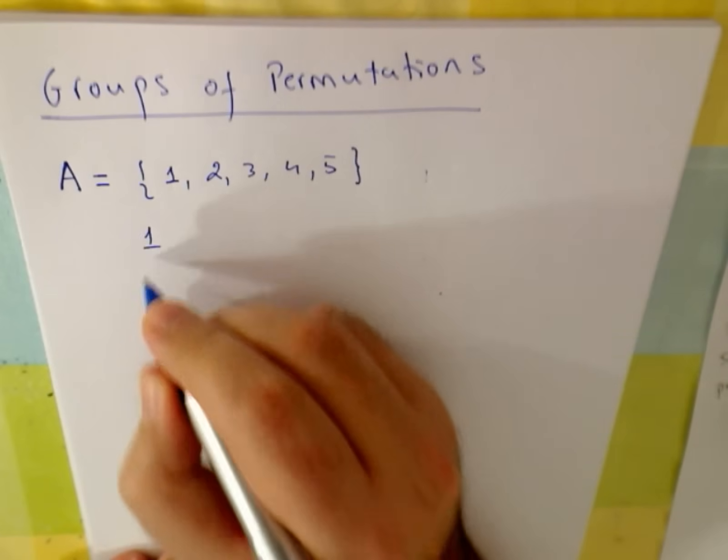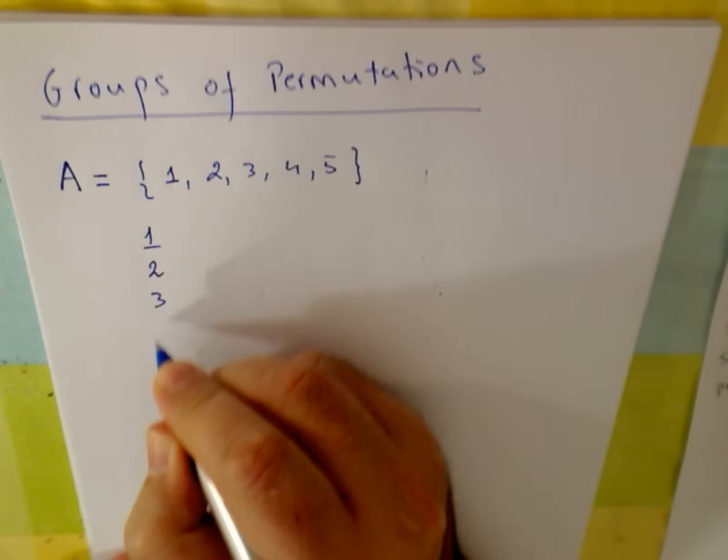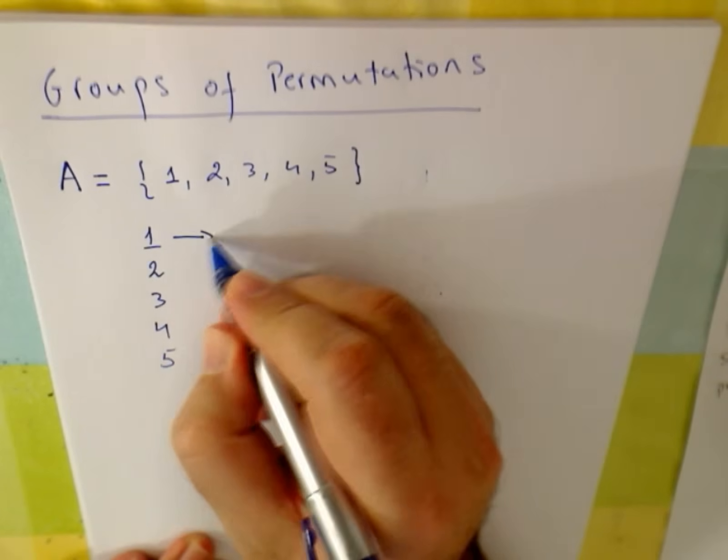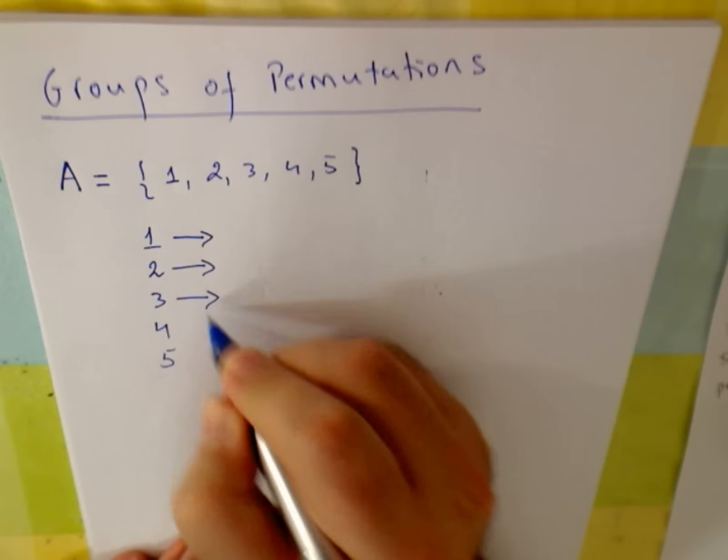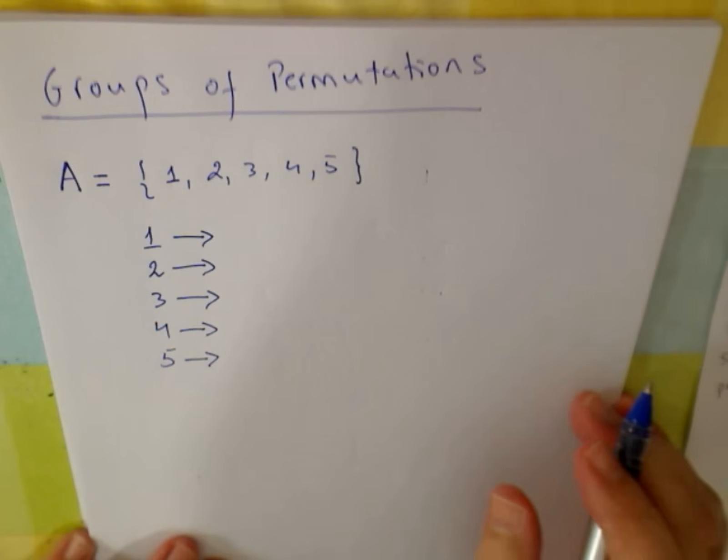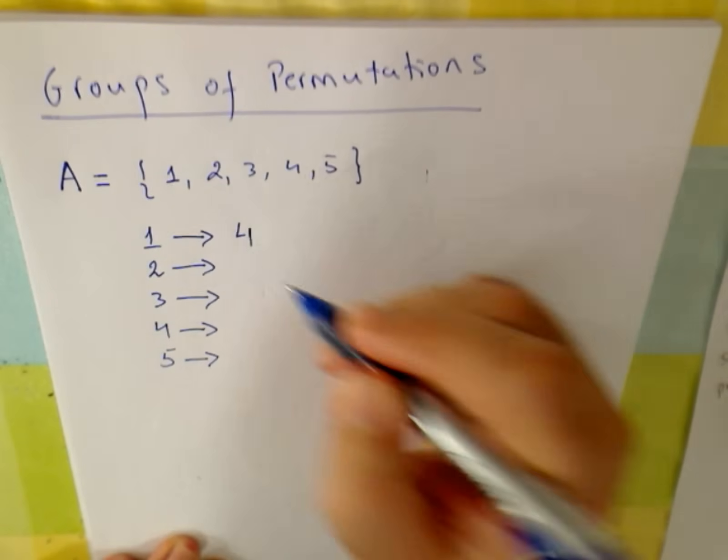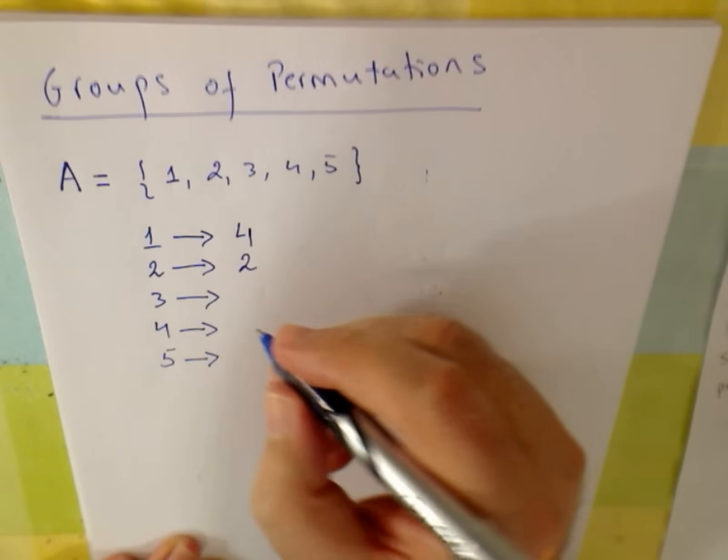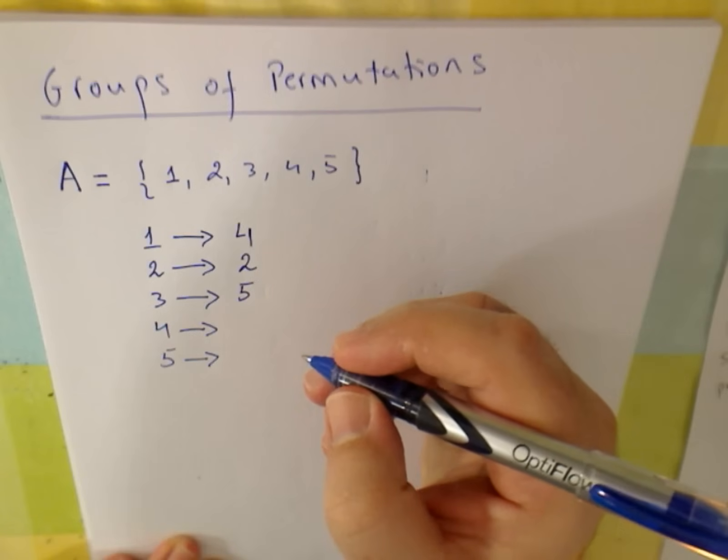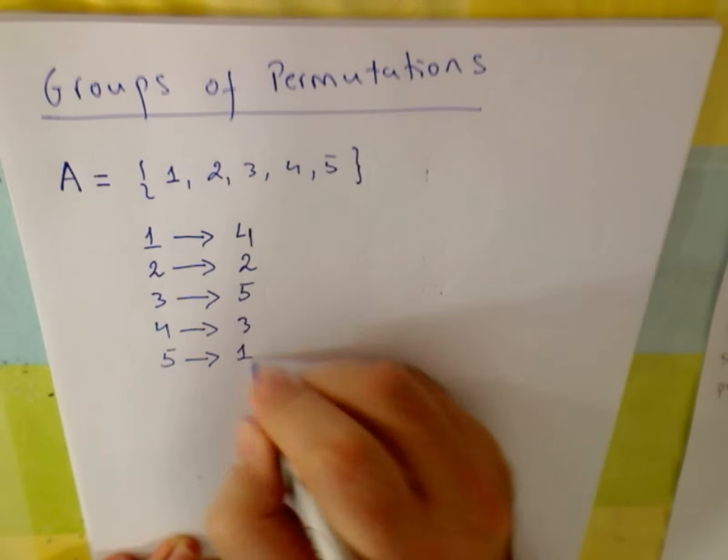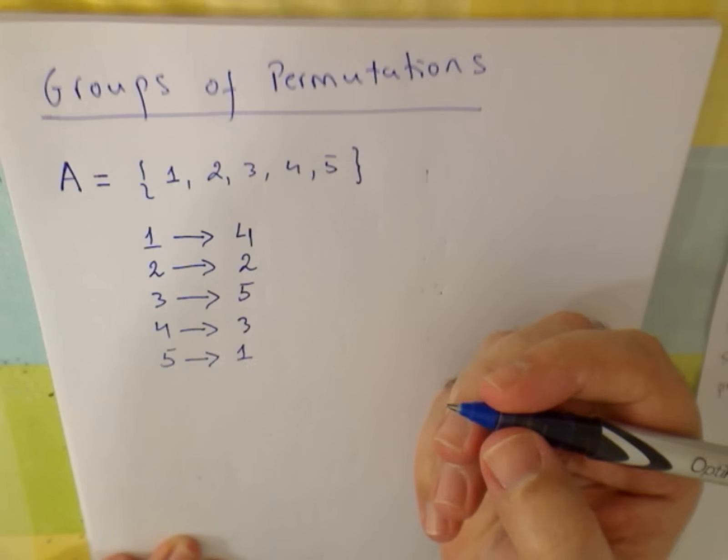Well, one permutation could be, for instance, each element goes to one element. 1 could go to 4, 2 could go to 2, 3 could go to 5, 4 could go to 3, and 5 could go to 1, for instance.